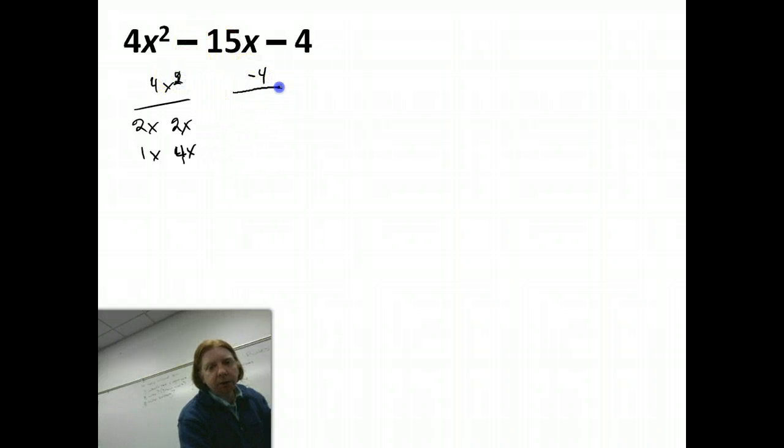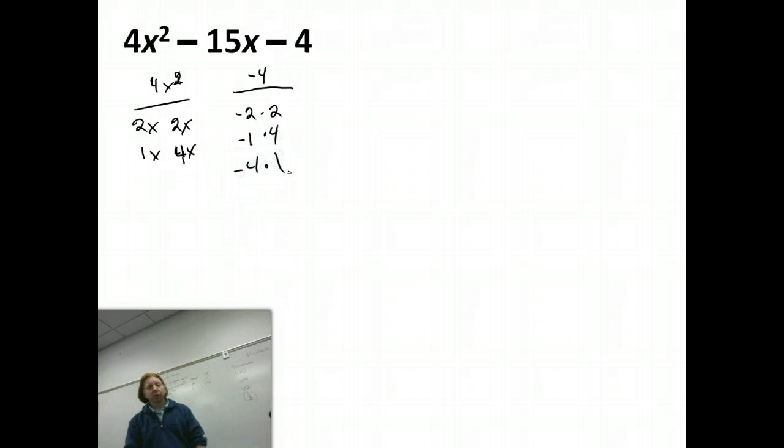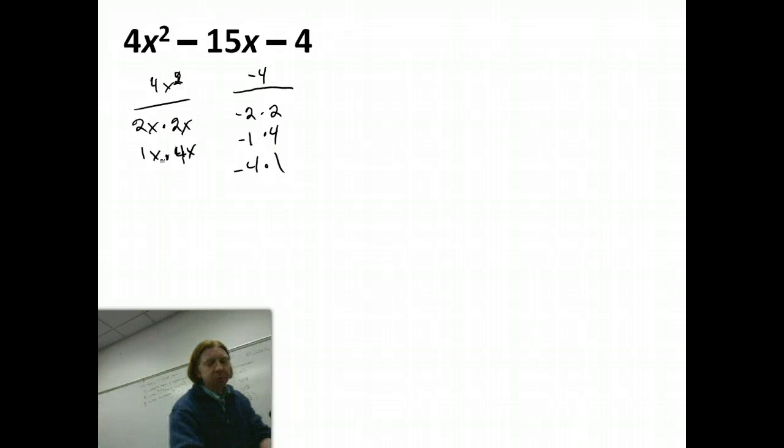Now, what about negative 4? What are two numbers that give me negative 2 and 2? What else? Negative 1 and 4, negative 4 and 1. So my final answer is going to be some combination of those five pairs of numbers. How are we doing with where those pairs of numbers came from? All right, so now we start writing some parentheses down.